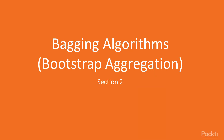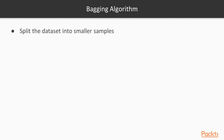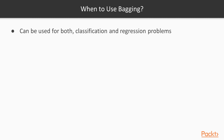Hello and welcome to section 2: Bagging Algorithms, also called Bootstrap Aggregation. In this video, we will be learning how to use the Bagged Decision Trees algorithm. Before we get into that, let's briefly define what Bagging Algorithms are. The Bagging Algorithm splits a dataset into smaller samples, then trains a model on each sample, makes predictions using each trained model on a new sample, and then averages out predictions from each model. Bagging can be used for both classification and regression problems; in our code examples, we are using classification.